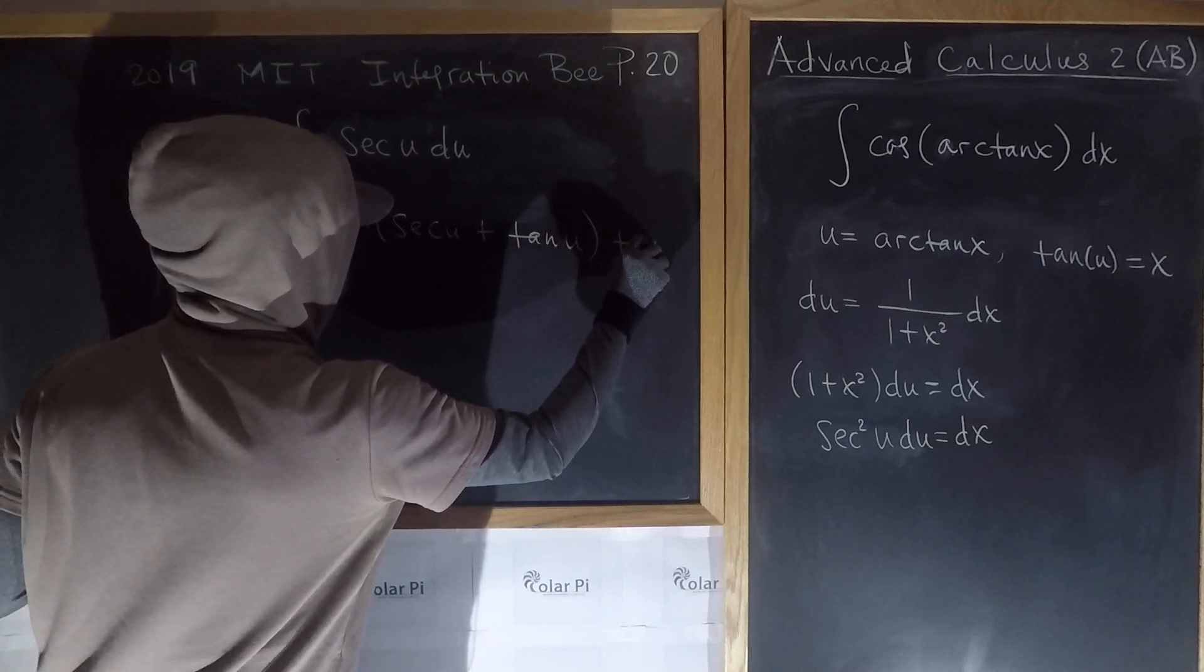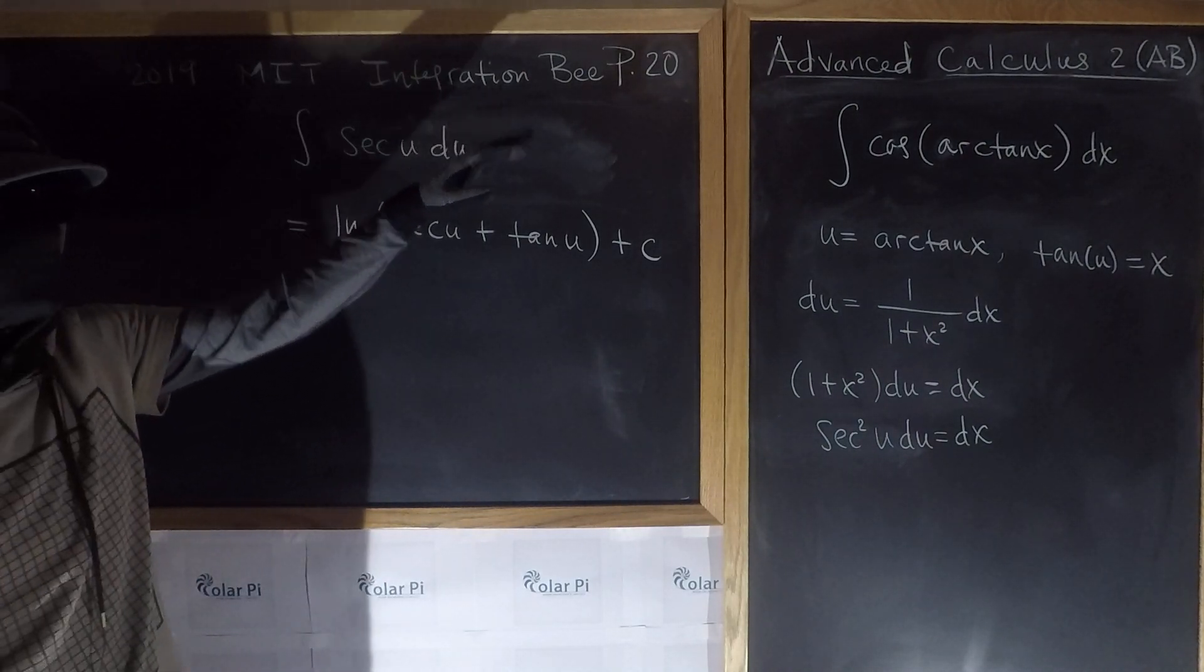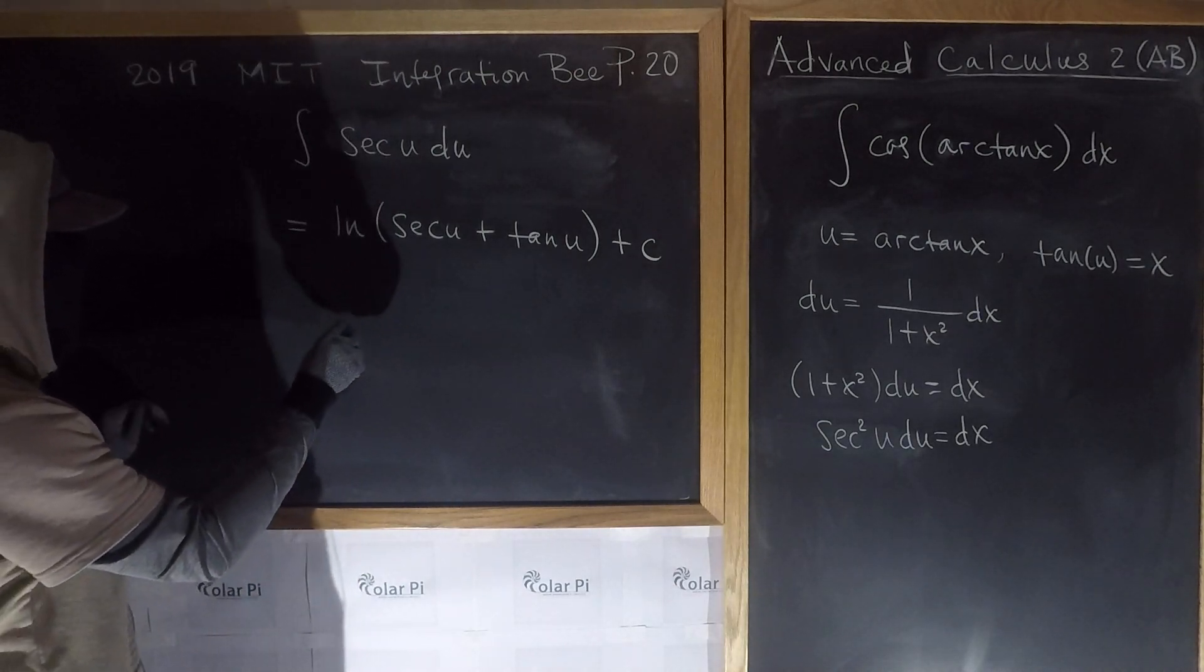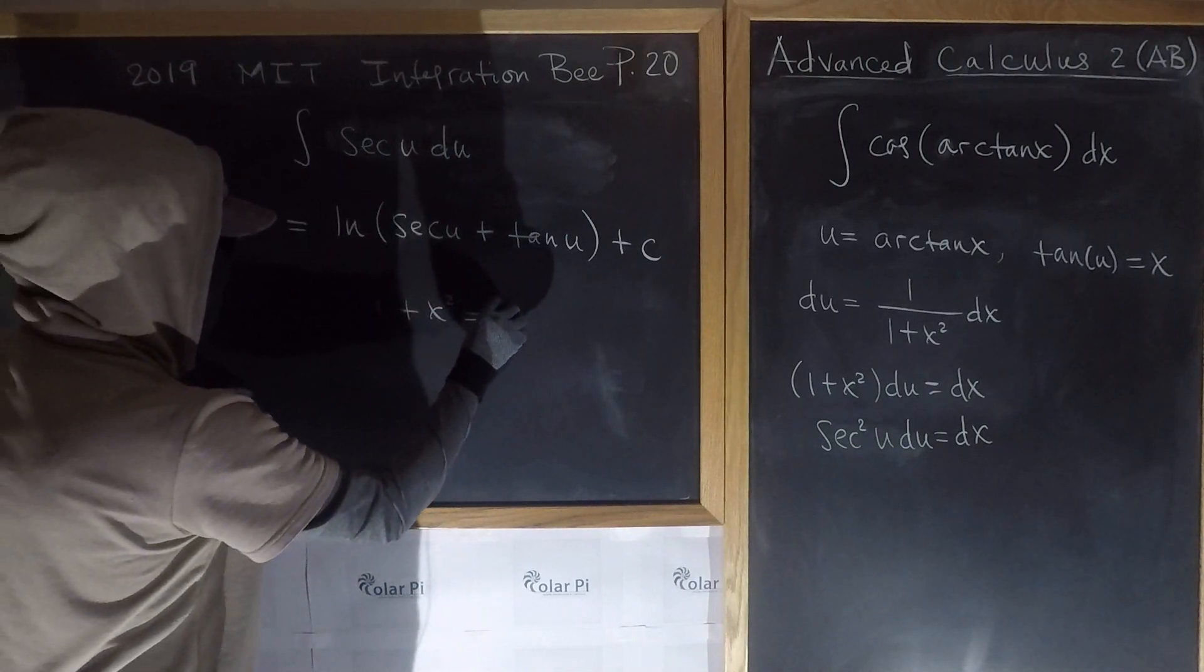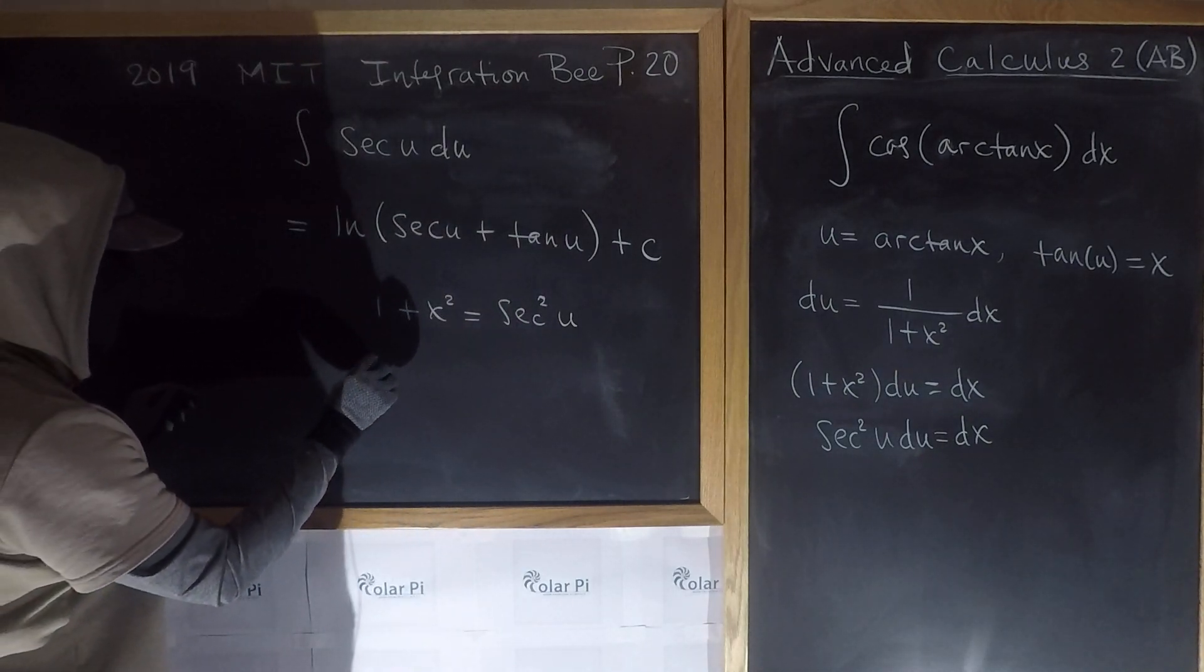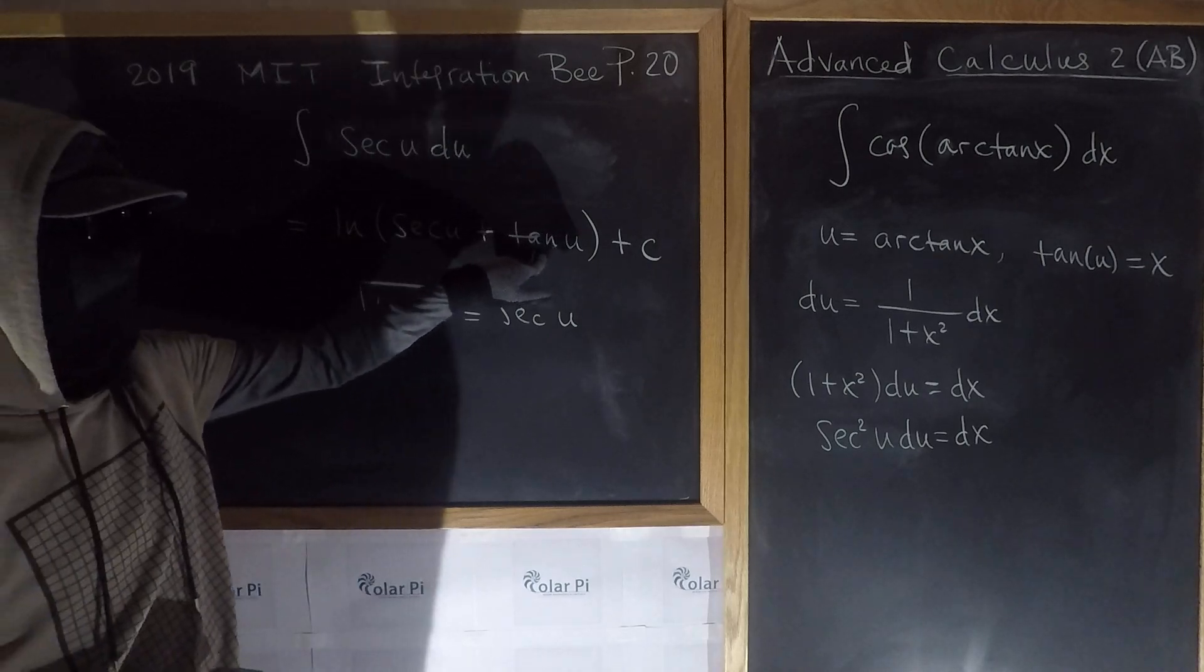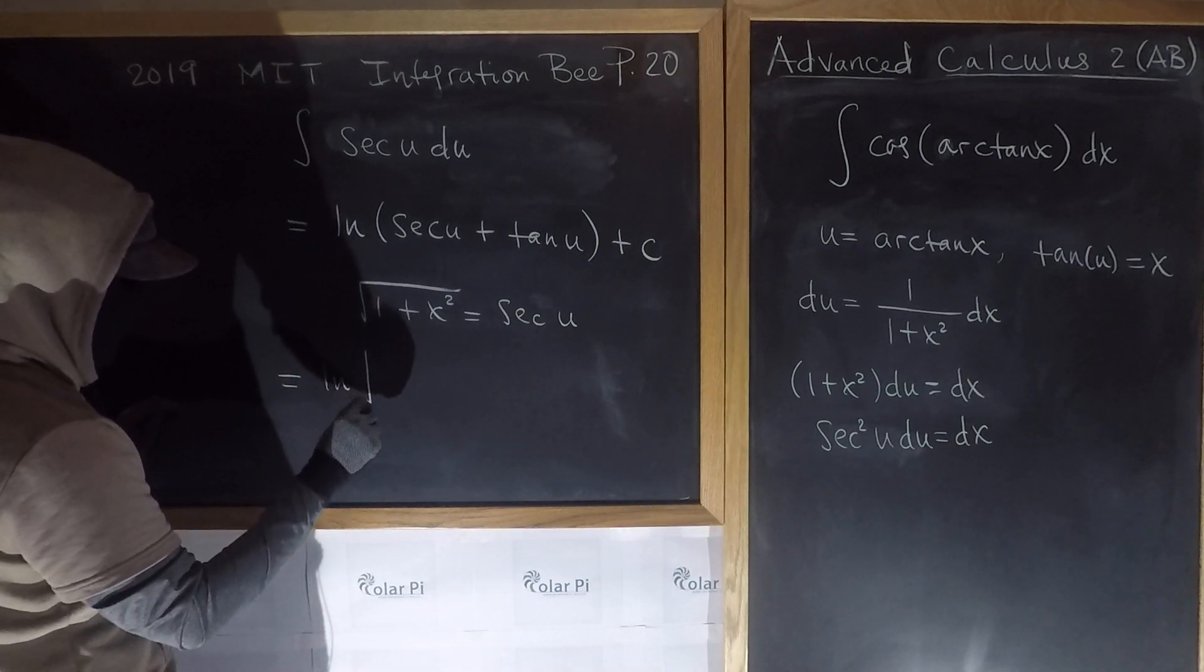So this here is this, but this is the same as our given integral. Now we go back to x. Now sec(u), what's sec(u)? Well, we said that 1 plus x² is equal to 1 plus tan²(u), so that was sec²(u). So then in terms of x, sec(u) we see is just the square root of 1 plus x². And then tan(u) we already have right there, that's x. So our final answer is the natural log of the square root of 1 plus x² plus x, and of course plus C.